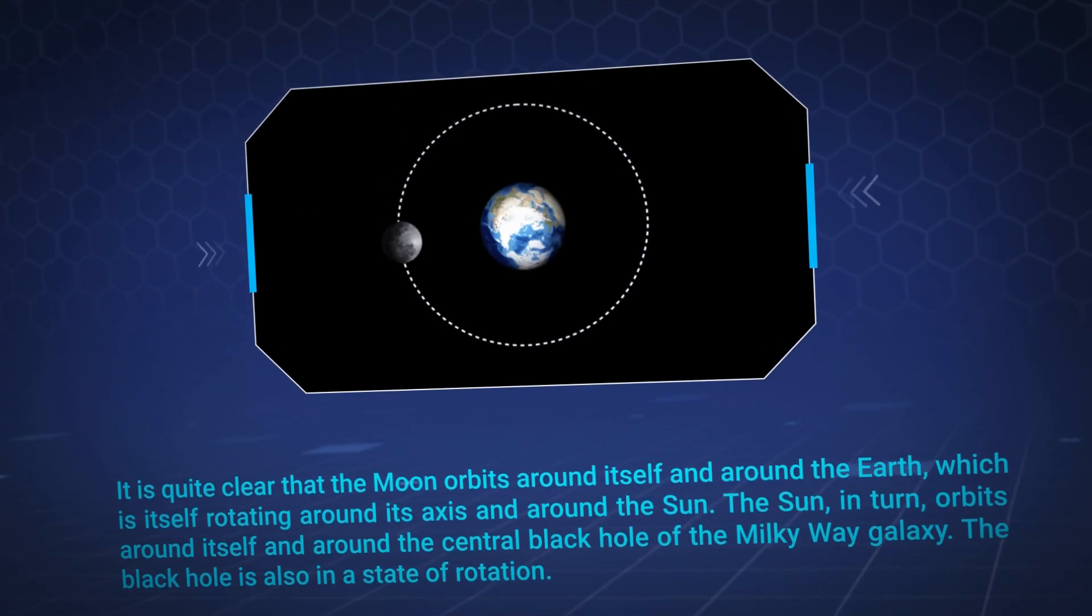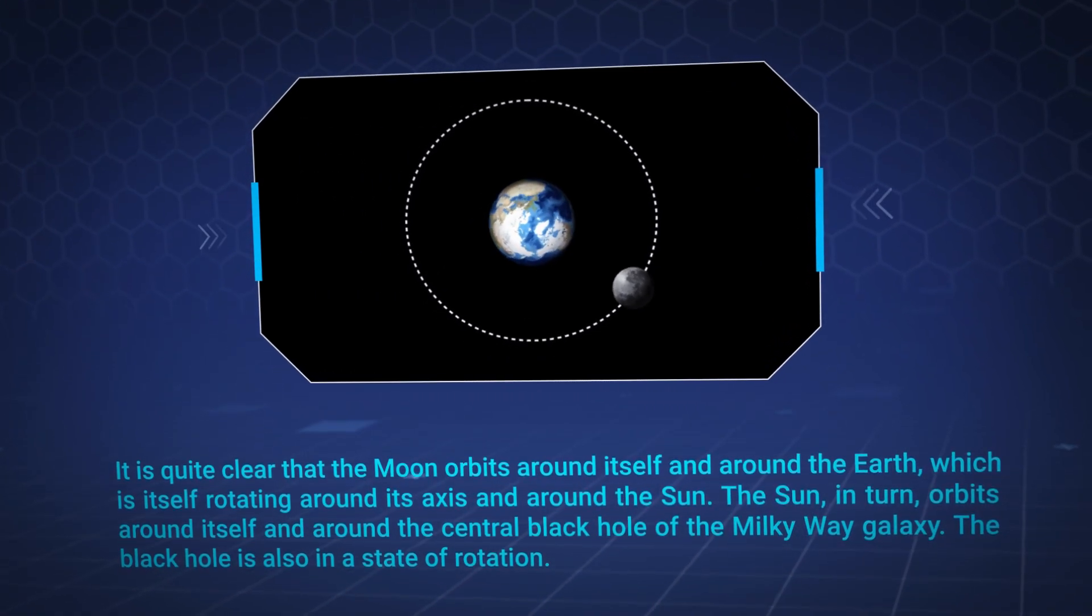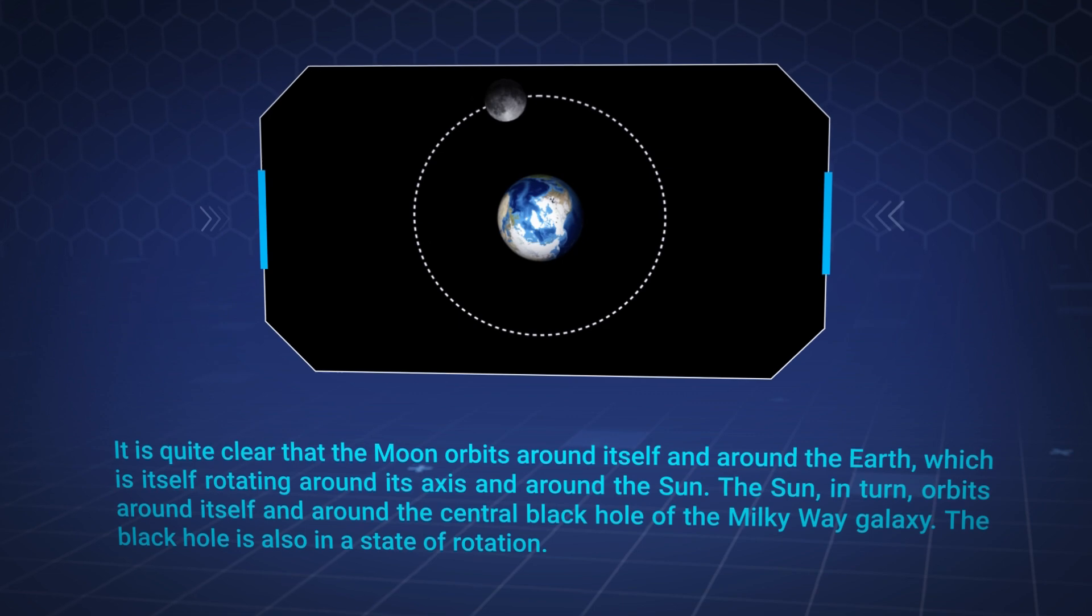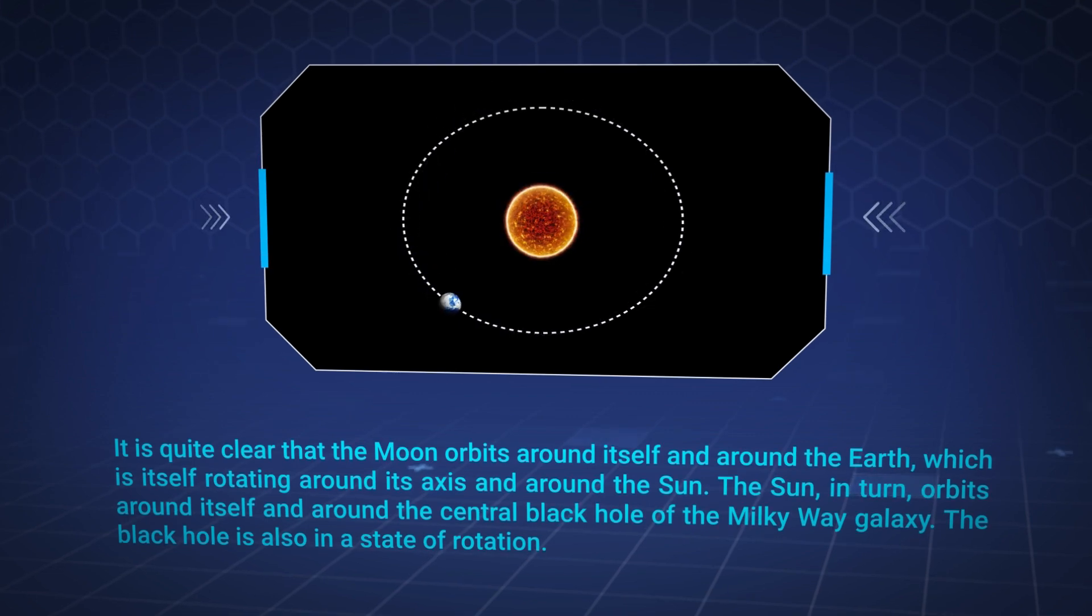It is quite clear that the Moon orbits around itself and around the Earth, which is itself rotating around its axis and around the Sun. The Sun, in turn, orbits around itself and around the central black hole of the Milky Way galaxy.